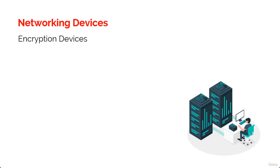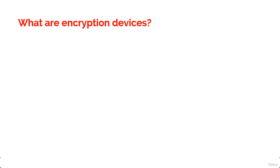Now let us talk about encryption devices. Although a number of devices we have discussed earlier can perform encryption services, there are dedicated appliances that can perform encryption as well. The advantage of using these devices is that they normally provide more choice of encryption methods and stronger encryption options. They also offload the process from other devices like routers and servers, which is a good thing because encryption and decryption is a very tedious, intensive process.